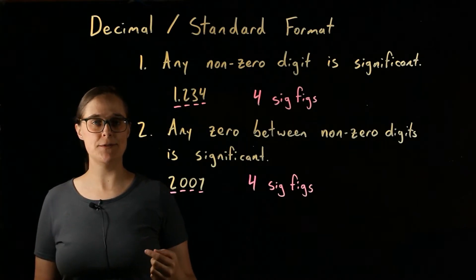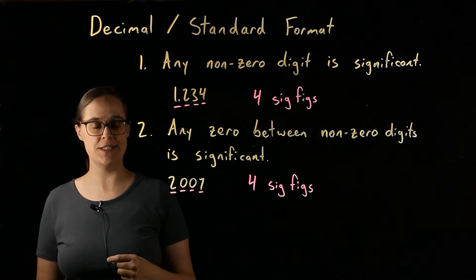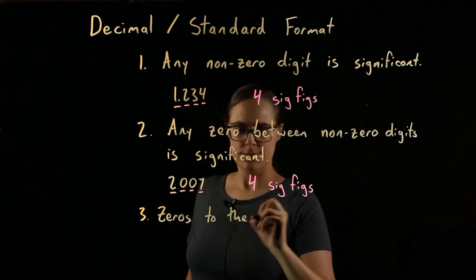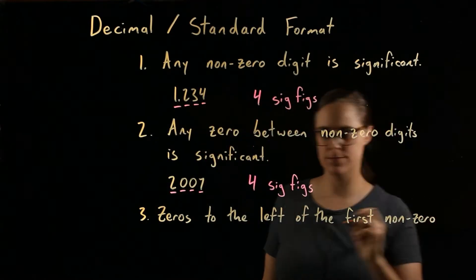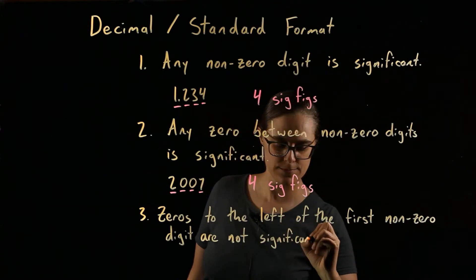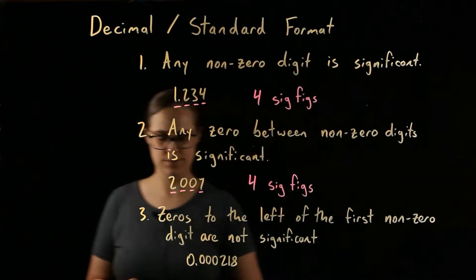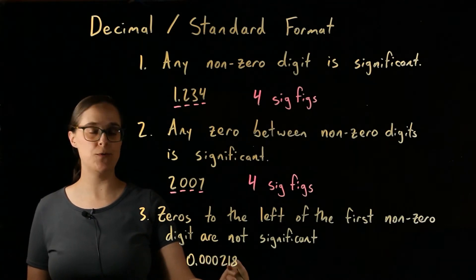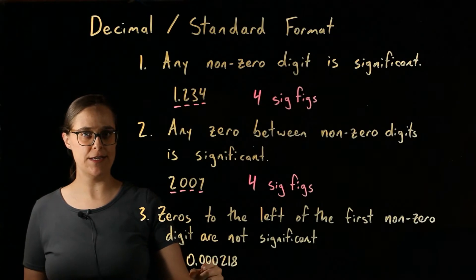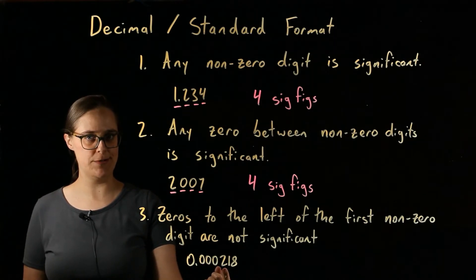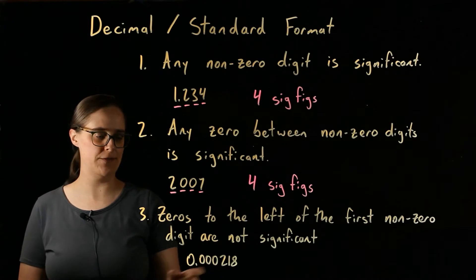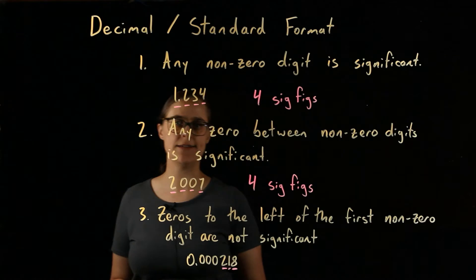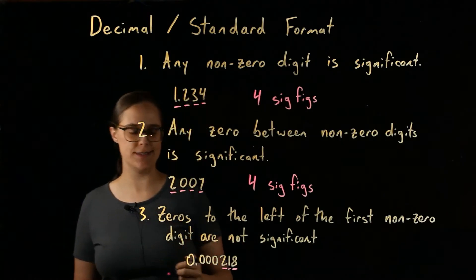Our third rule: zeros to the left of the first non-zero digit are not significant. In the value 0.000218, these zeros to the left of our first non-zero digit — which is the 2 — are all not significant. Our significant figures are the 2, the 1, and the 8. We have a total of 3 significant figures.